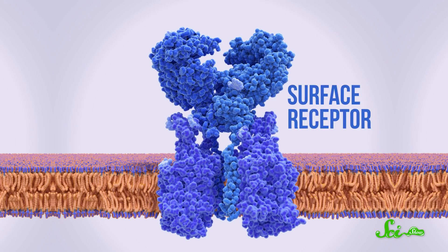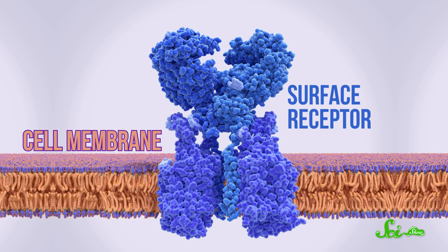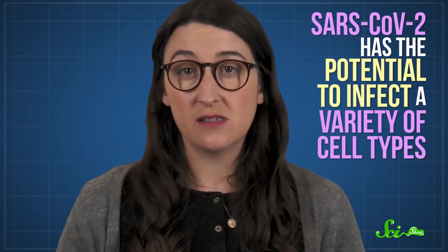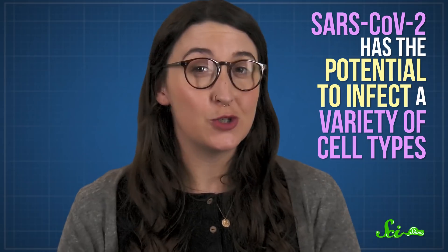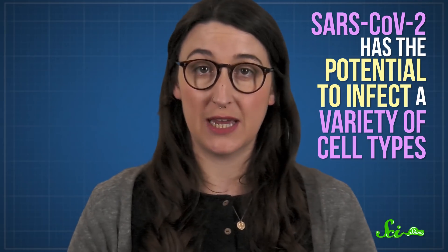All cells have various surface receptors embedded in their outer membrane. As their name suggests, they receive signals and stuff from outside the cell—stuff like hormones, neurotransmitters, nutrients, and immune molecules. ACE2 is a surface receptor with a bunch of important jobs throughout our bodies, not just our lungs. Unluckily for us, that also means SARS-CoV-2 has the potential to infect a variety of cell types. It still only causes the one disease, COVID-19, but this helps explain some of its broader effects.